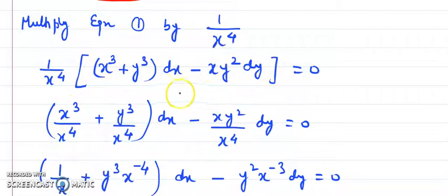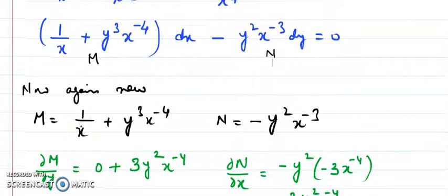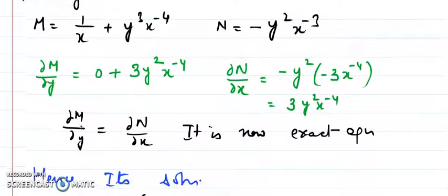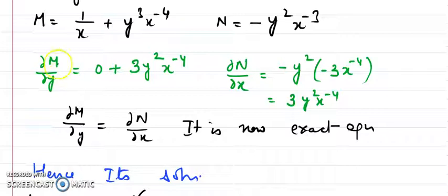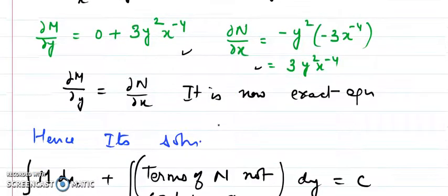Now multiply the original M and N by the integrating factor 1/x⁴. This gives: (x³/x⁴ + y³/x⁴) dx + (−xy²/x⁴) dy = 0, which simplifies to a new differential equation with a new M and new N. Checking exactness on the new equation: ∂M/∂y = 3y²·x⁻⁴ and ∂N/∂x = −y²·(−3)x⁻⁴ = 3y²x⁻⁴. These are equal, so it is now exact.